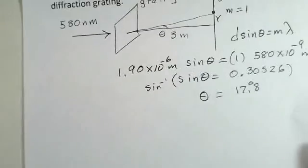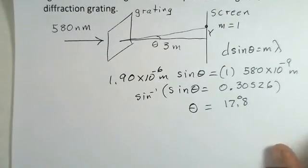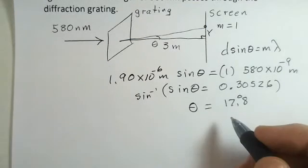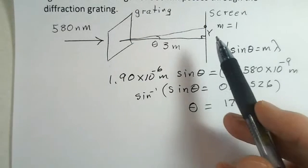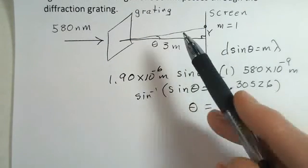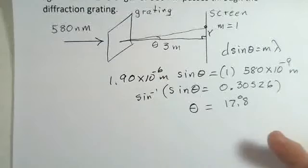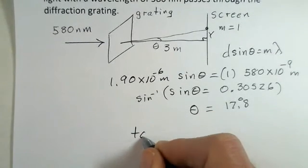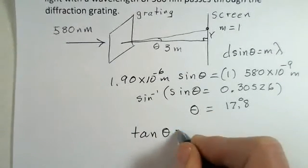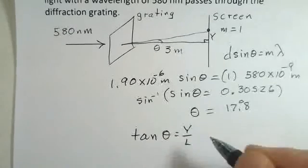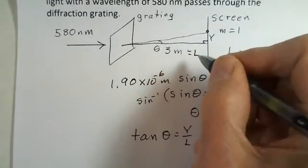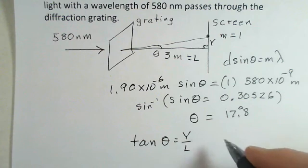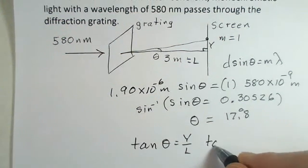To get the physical distance, the Y value, if you look in this triangle, it's right angle here, we're working with the two short sides of the right triangle. We don't know the value for the hypotenuse, so it is the tangent function that is appropriate. The tangent of theta is Y over L. This 3 meter distance is usually labeled L, the distance from the grating to the screen. And we have numbers to put in here.